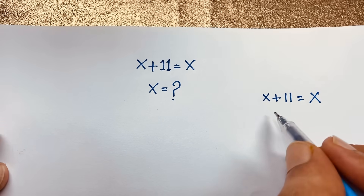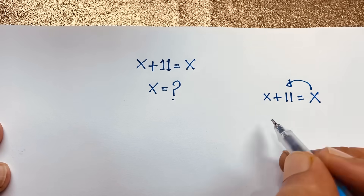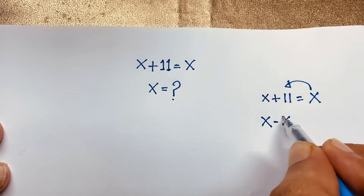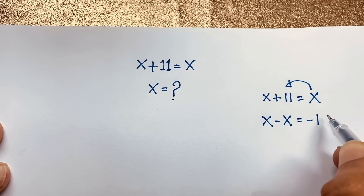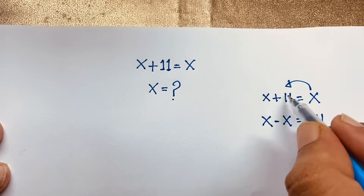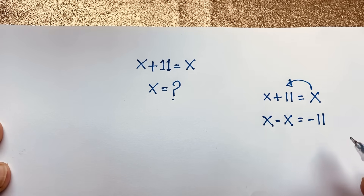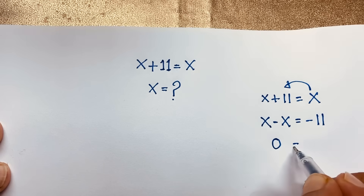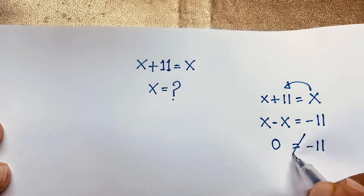Now at this moment, if I move this x to this side it will be x minus x is equal to minus 11. I just move this 11 to this side, it will be negative 11. Then it will be 0 is equal to negative 11. It is not possible.